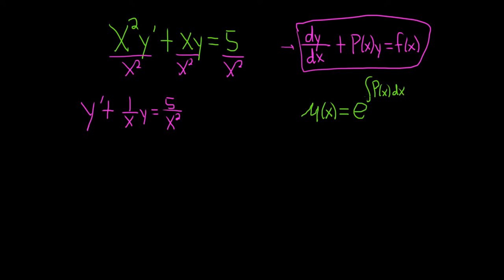So big P is always whatever is in front of your y. So here it's going to be this piece here. So in this case it will be e to the integral of 1 over x dx.